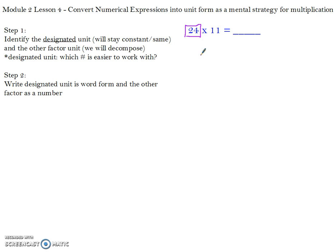Step 2 is you want to write the designated unit in word form and the other factor as a number. So my designated unit is 24, so I'm going to write 24. And my other number, 11, will remain in number form. So what I have is 11 twenty-fours with an S because I have multiple 24s.